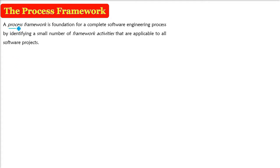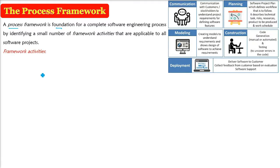The process framework is the basis of the software engineering aspect. The process framework is a foundation for a complete software engineering process. There are certain framework activities, and these have to be applied across all software projects — not just one. Let us see what the framework activities are: these are the activities and actions that, combined collectively, will give you a certain product.